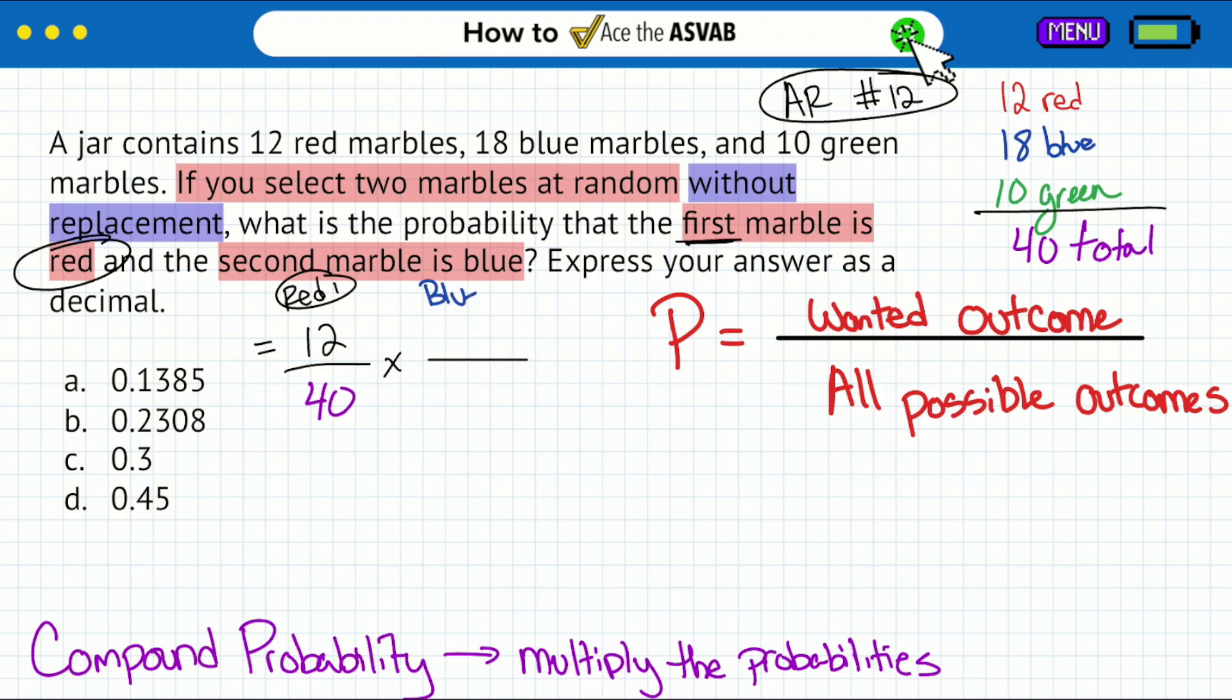This is for red, and now we will multiply the probability for blue. Here's the trick: they tell us that we are without replacement. So we are not replacing that red marble that we chose. It doesn't affect the number of blue marbles, so it's 18 blue. Be careful, because we said no replacement. If we take away one red because we selected that, we will write 11 right over here. And now that we have 11, we don't have a total of 40 anymore. We have a total for the second round of 39.